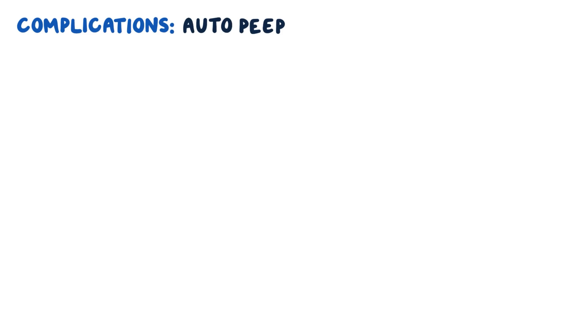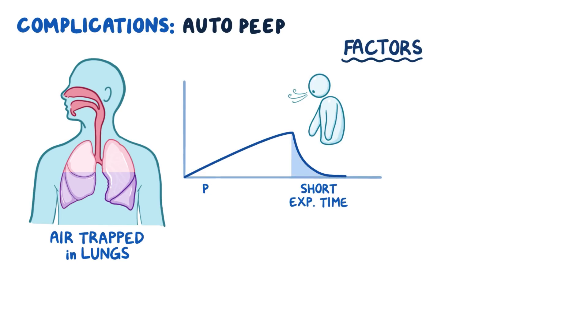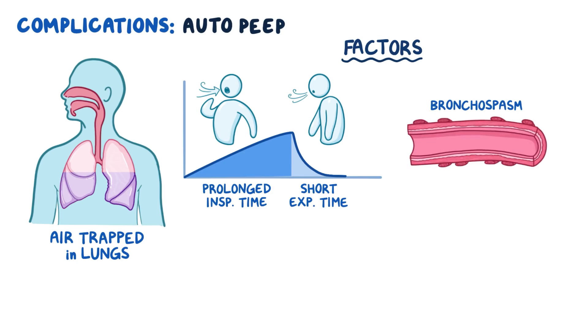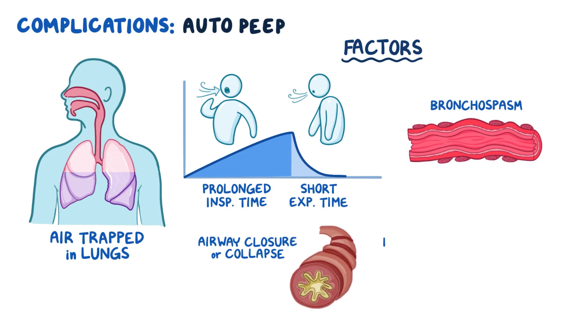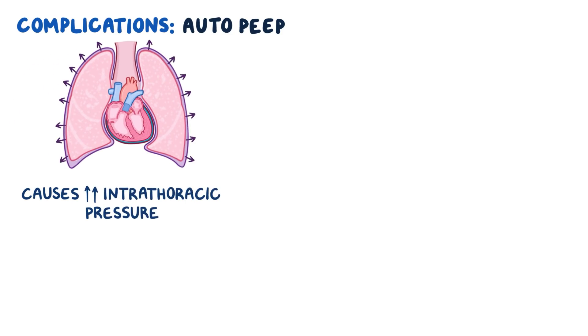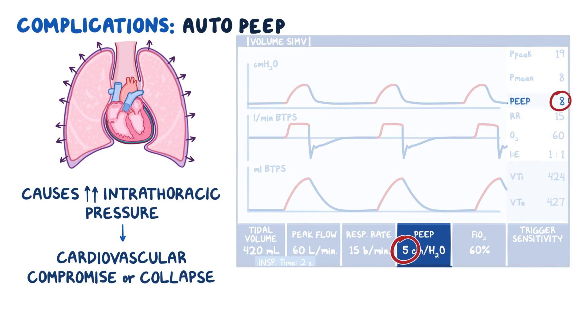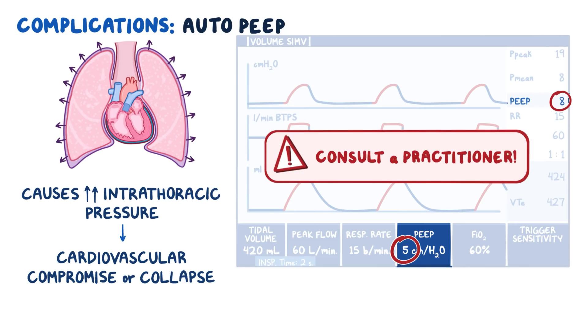Auto-PEEP is another common complication of mechanical ventilation, where air gets trapped in the lungs at the end of expiration because of incomplete expiration time. It's associated with several factors including short expiratory time, prolonged inspiratory times, bronchospasm, airway closure or collapse, and hyperexcretion of mucus to name a few. Auto-PEEP causes increased intrathoracic pressure due to a stacking of breaths that can result in consequences as severe as cardiovascular compromise or collapse. If you notice a higher PEEP than is set on the ventilator, which means that you're not returning to the baseline, this could be a problem. Consult the practitioner immediately if you suspect this issue.